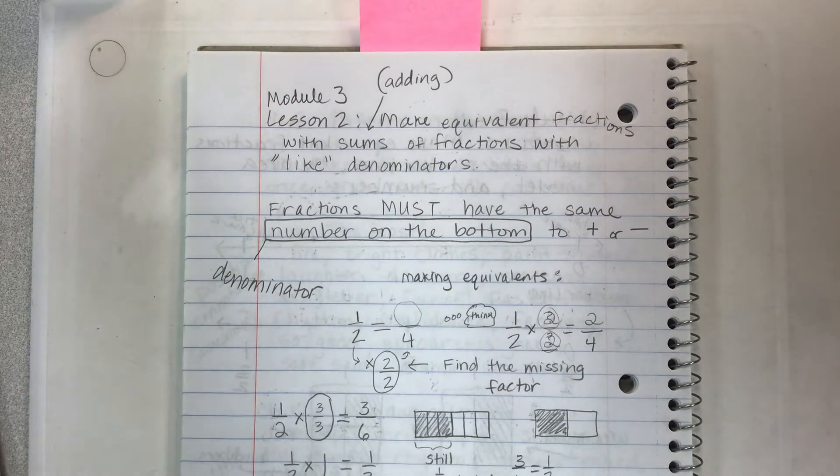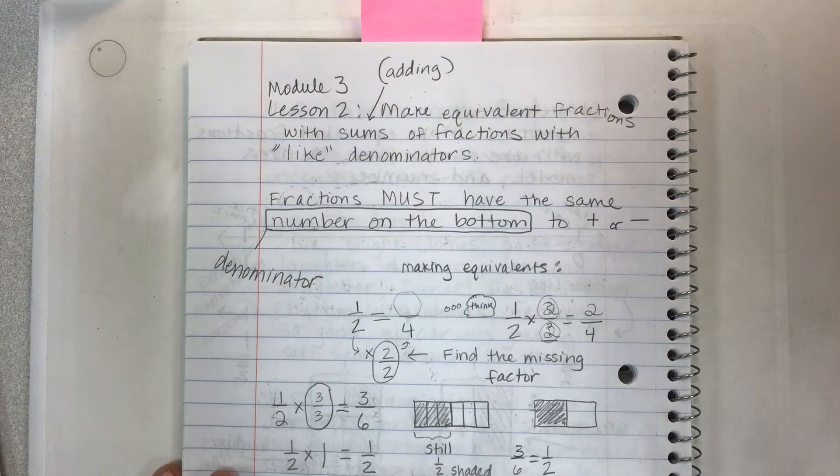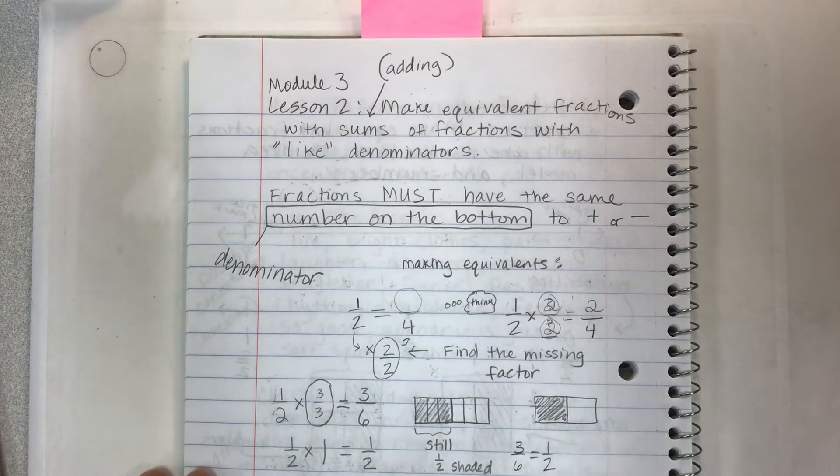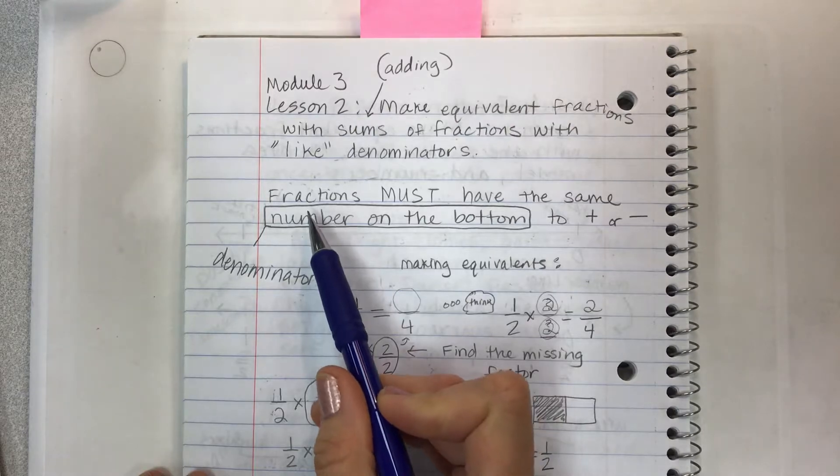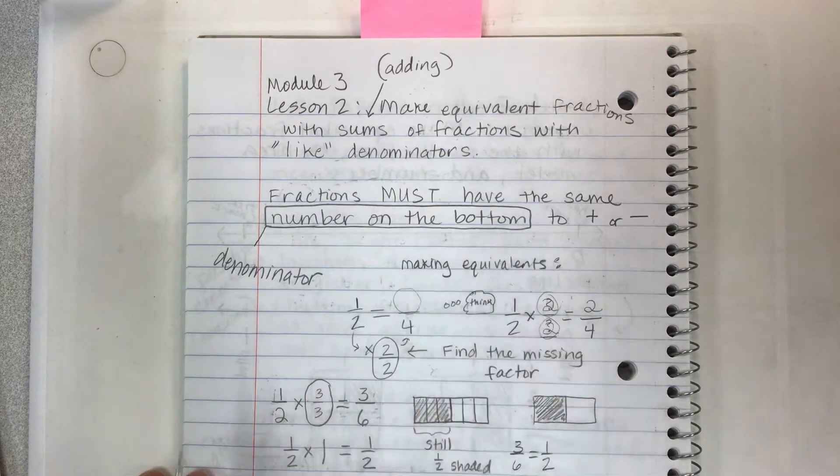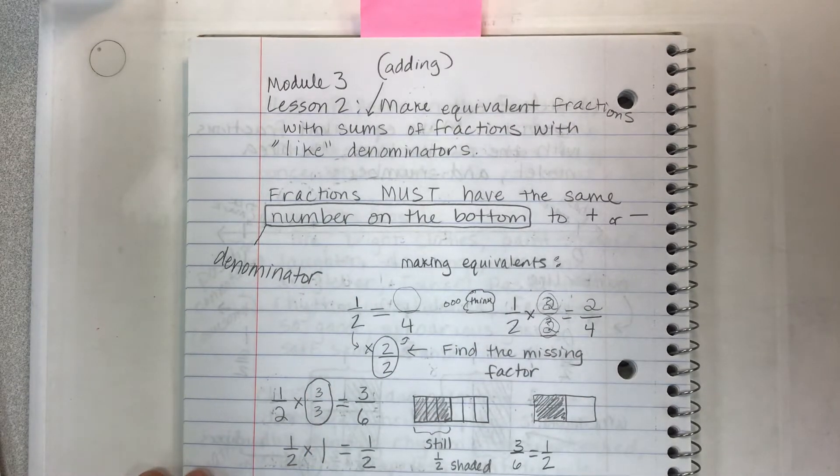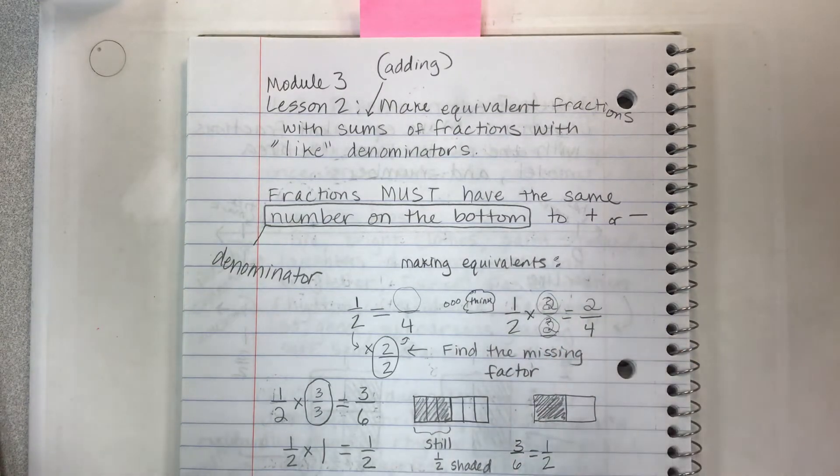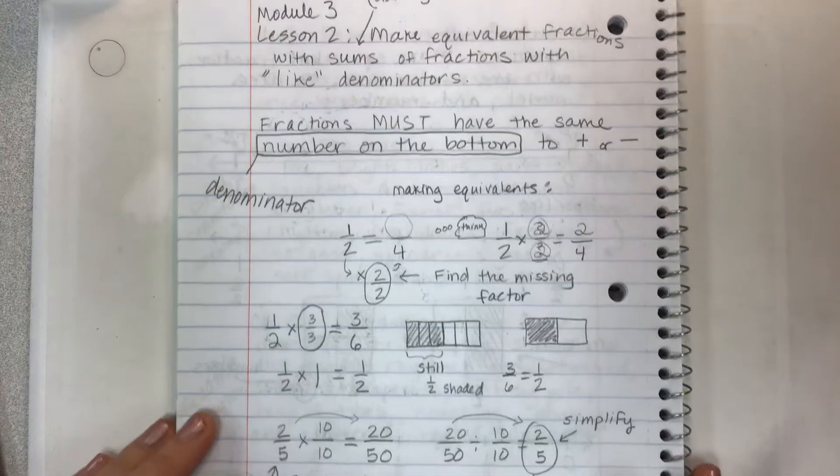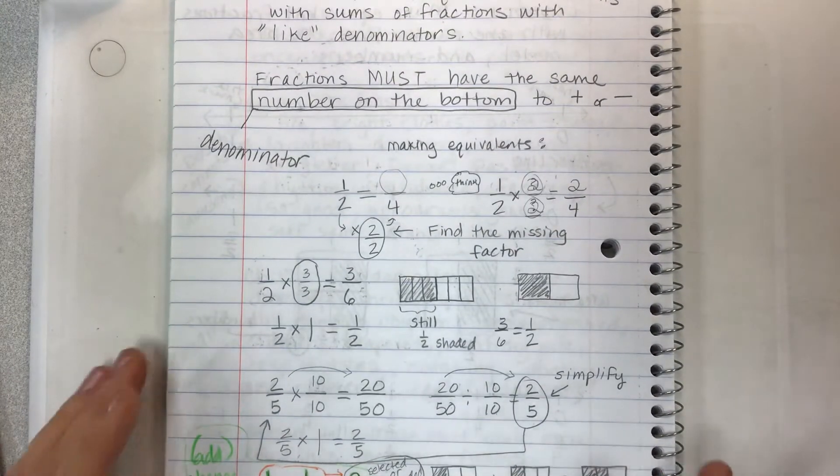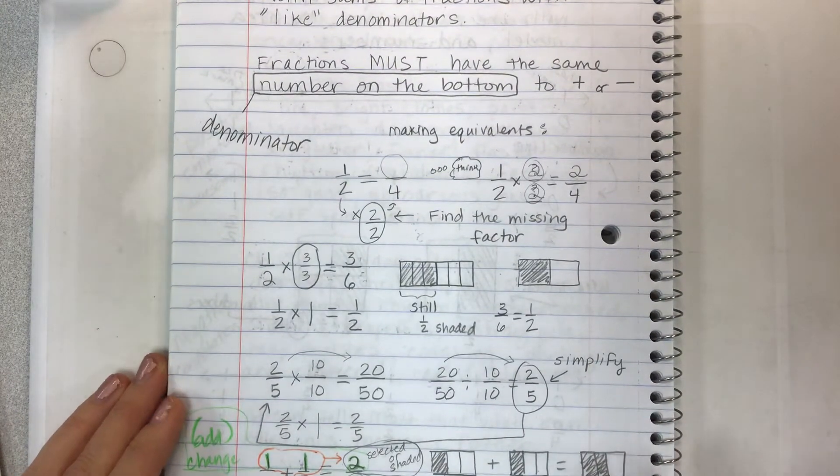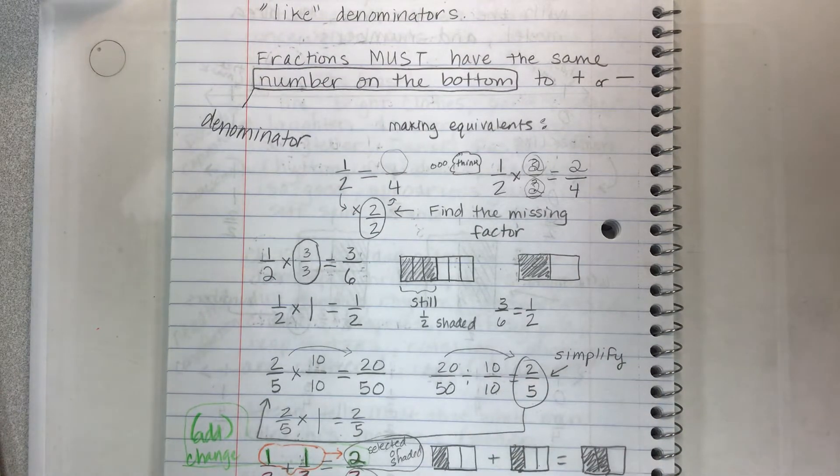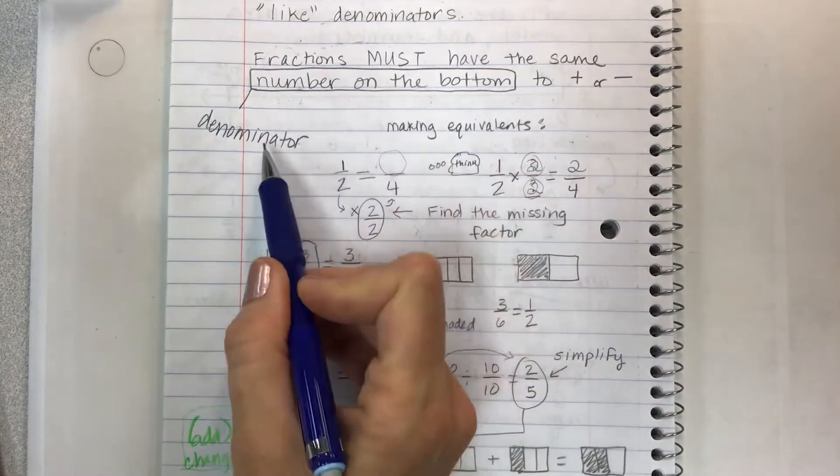And it's super interesting how this program does it. So a couple of really important notes that you want to make sure to get down in your notebook: first of all, fractions must have the same number on the bottom to add or subtract them. So we're talking about like items. They have to be the same. The number on the bottom is called the denominator.